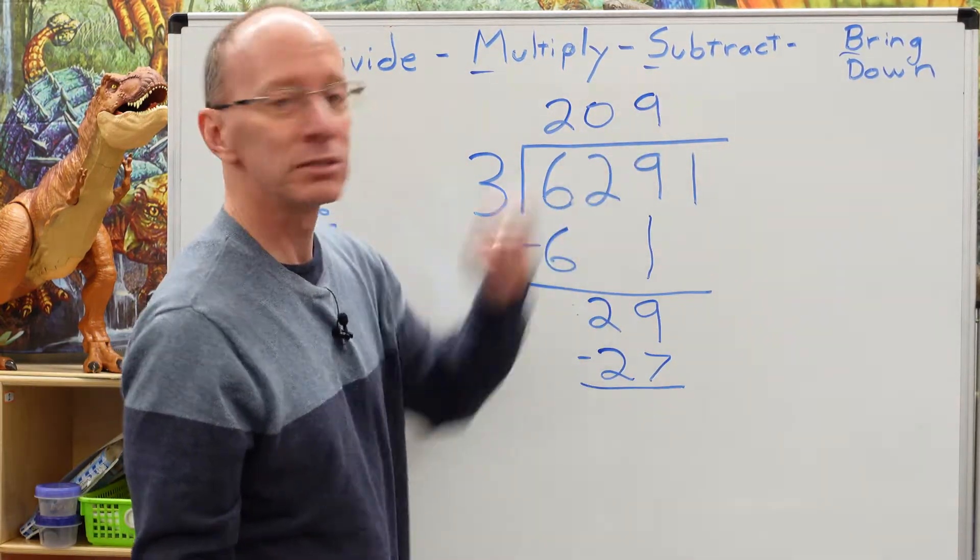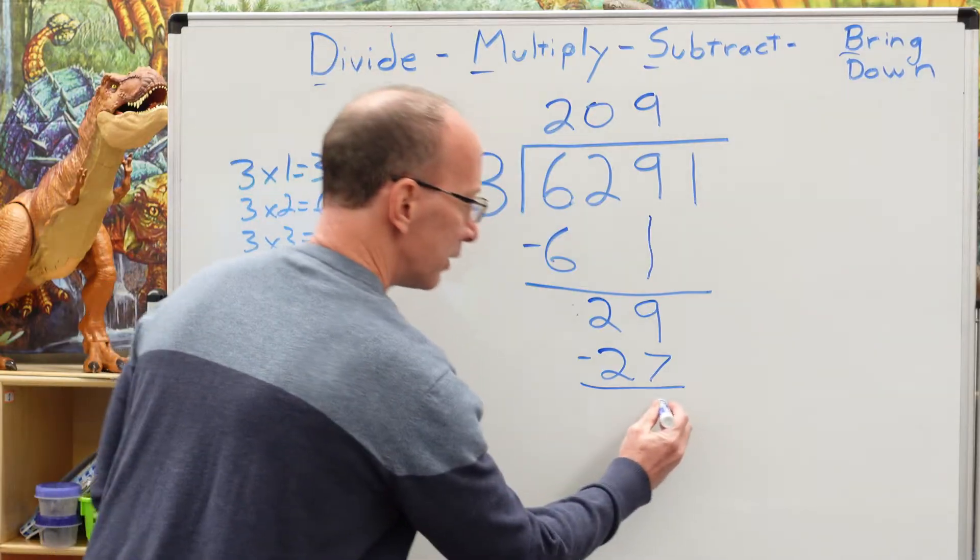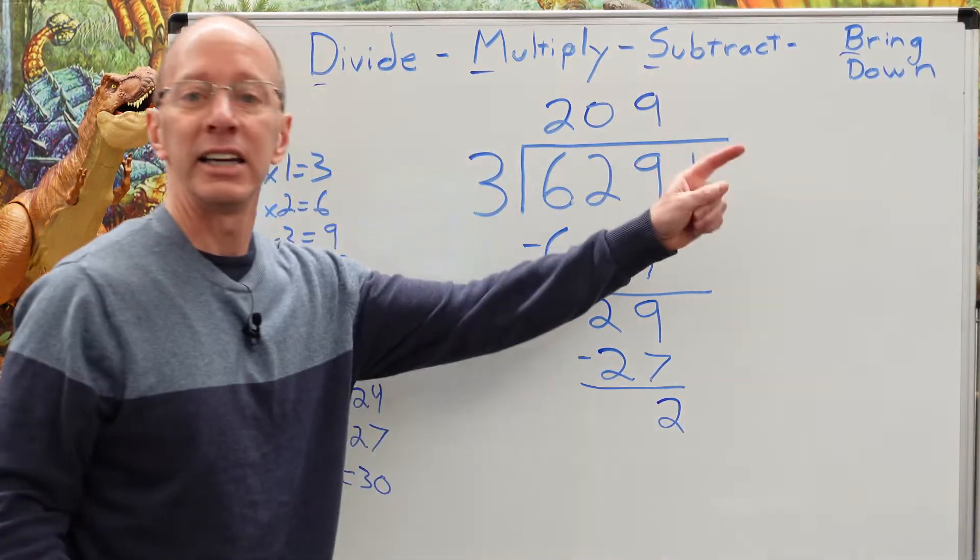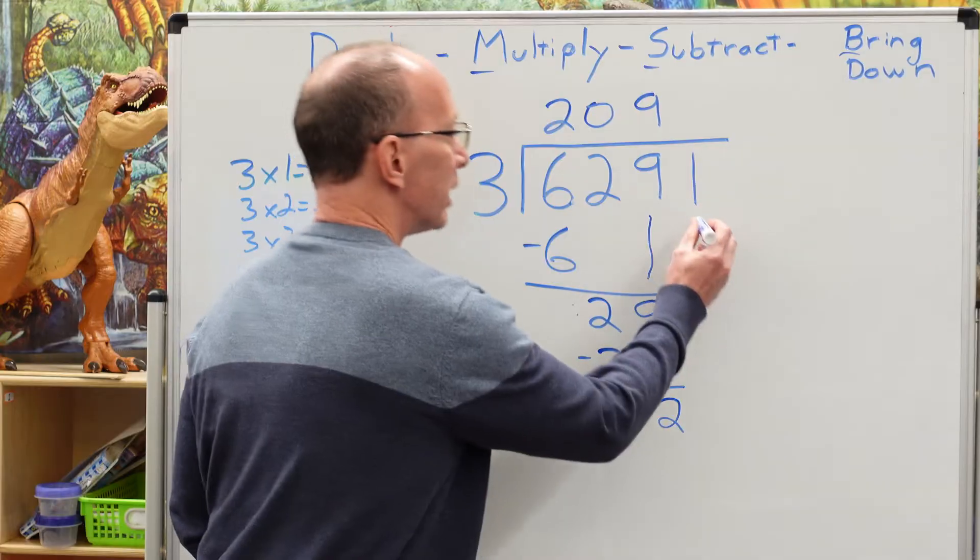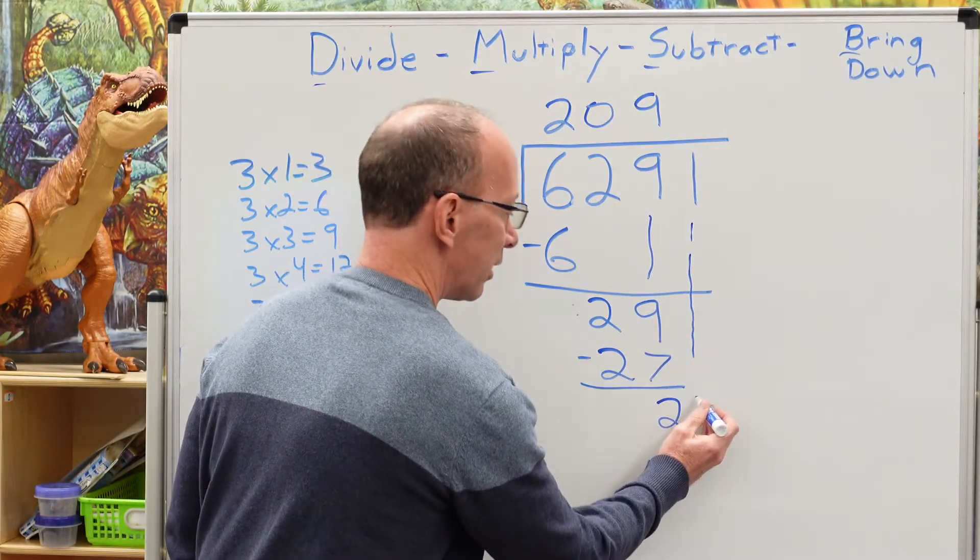Next step. What is it right here? Subtract. Nine minus seven, two. Bring that next number down right there.